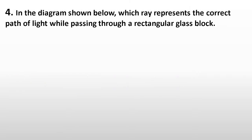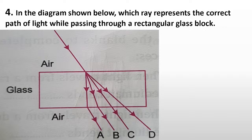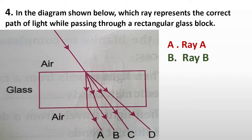Question number four. In the diagram shown below, which ray represents the correct path of light while passing through a rectangular glass block? Look at the image properly. You have to answer this question. Options: A, ray A; B, ray B; C, ray C; D, ray D.